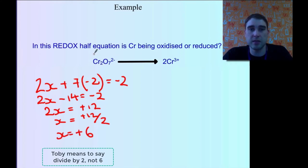So in this case, chromium over here has an oxidation number of plus 6.